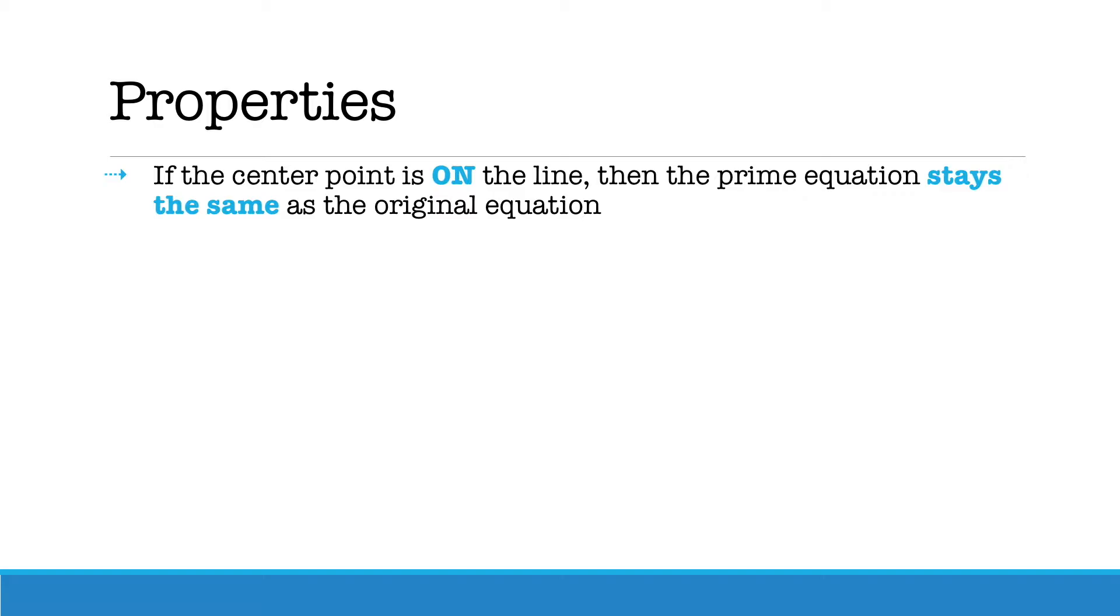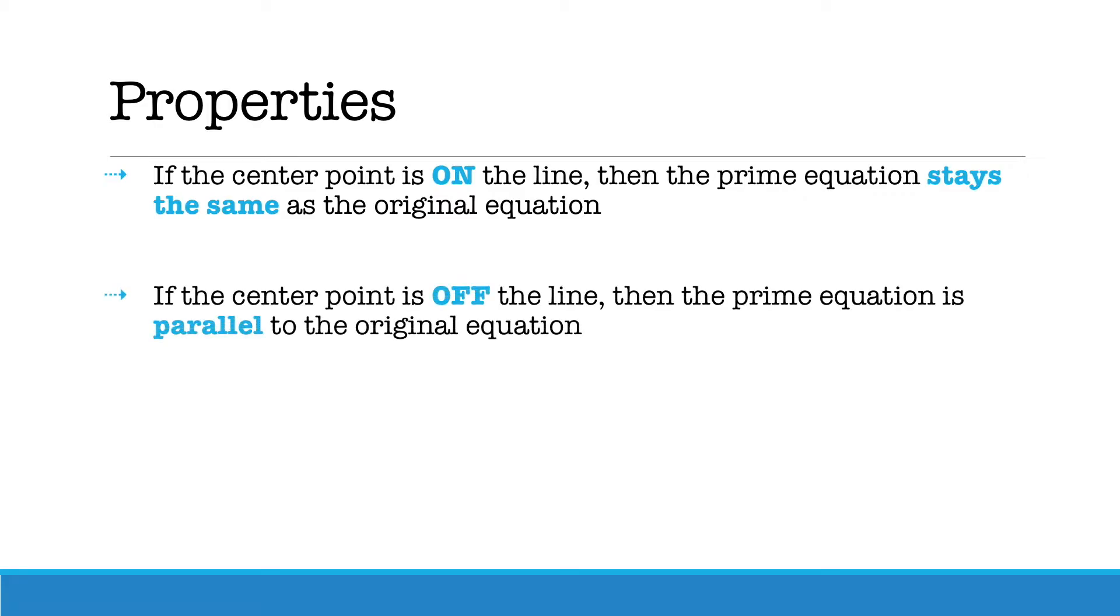When you are dilating a linear equation, you want to check if the center point is either on the line or off the line. If the center point is on the line, then the prime equation stays the same as the original equation. If the center point is off the line, then the prime equation is parallel to the original equation.